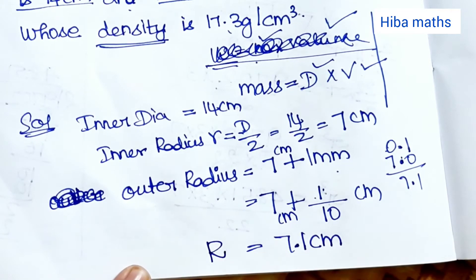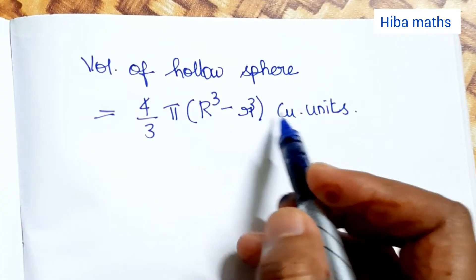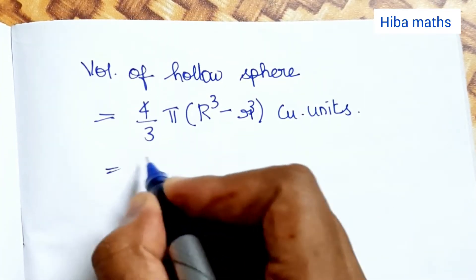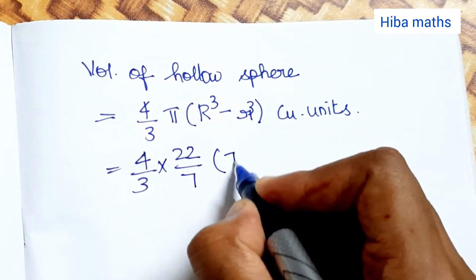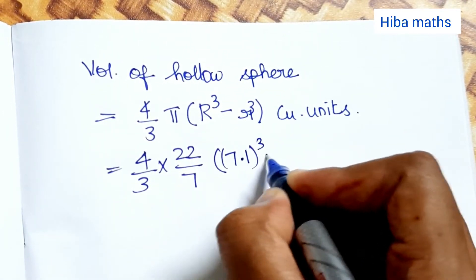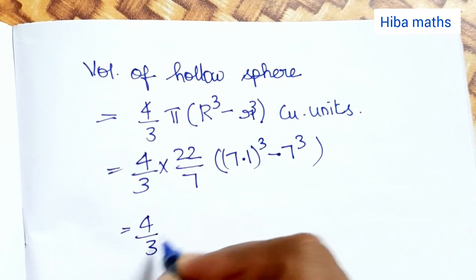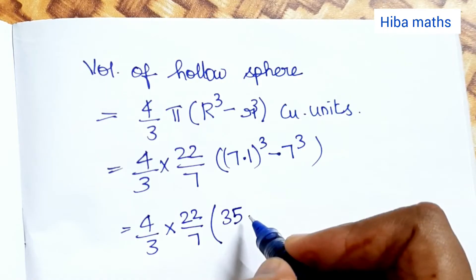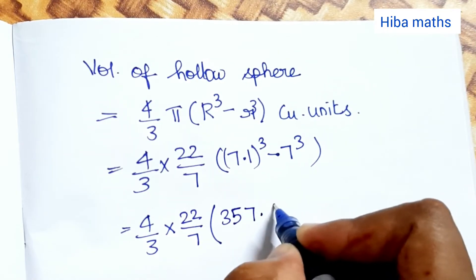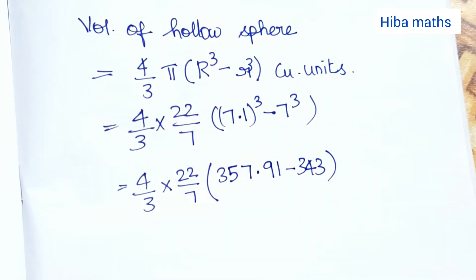Now we find the volume using the formula: V equals 4 by 3 into pi into (R³ minus r³) cubic units. Substituting: 4 by 3 into 22 by 7 into (7.1³ minus 7³). That gives 4 by 3 into 22 by 7 into (357.91 minus 343).